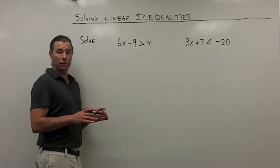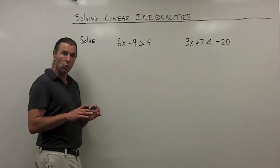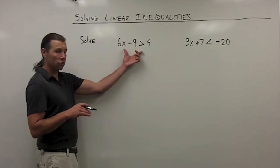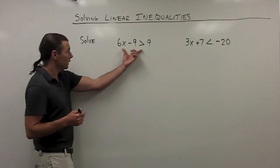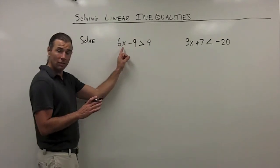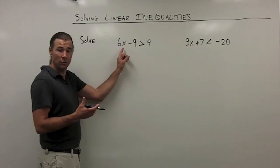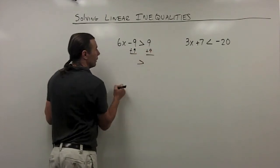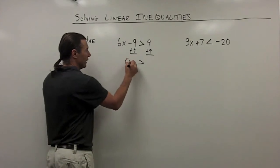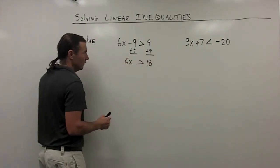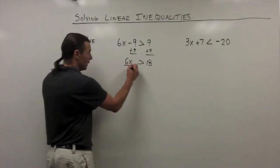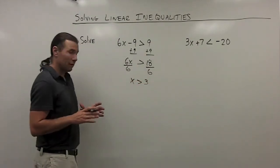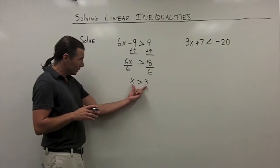When we go to solve linear inequalities, we solve them exactly the same way we solve equations, with one exception — I'll get to that in a moment. For now, let's solve this linear inequality the same way we would an equation. I'm trying to isolate x. First, I would add 9 to both sides, keeping the inequality sign, which gives me 6x is greater than 18. Then divide both sides by 6, and we get x is greater than 3.